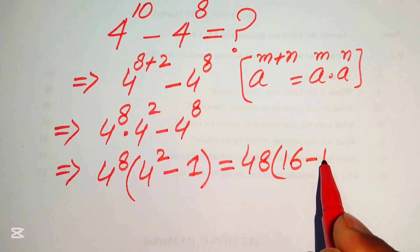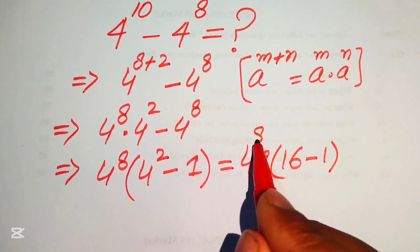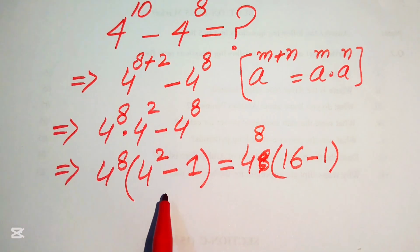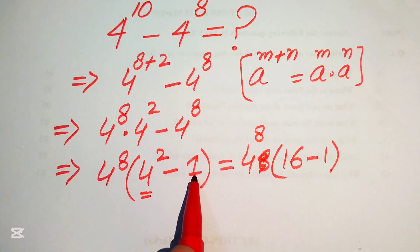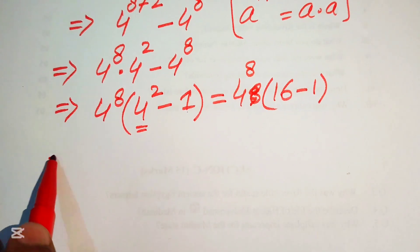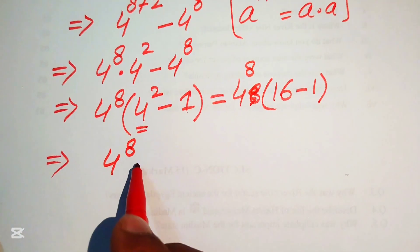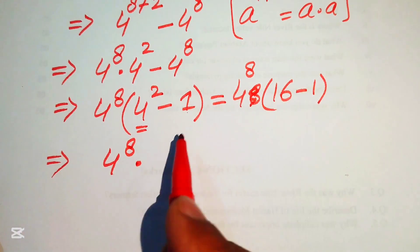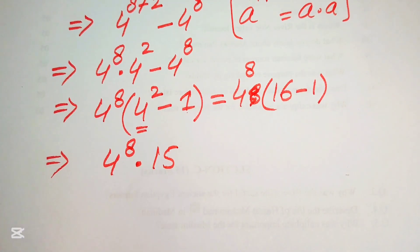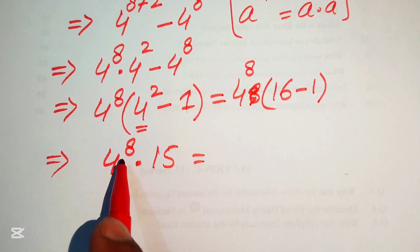We write 4 squared as 16, so we have 4 to the power of 8 times (16 minus 1). Since 16 minus 1 equals 15, we get 4 to the power of 8 multiplied by 15.